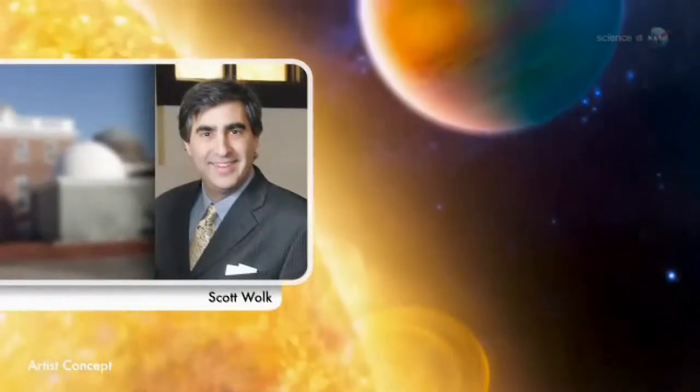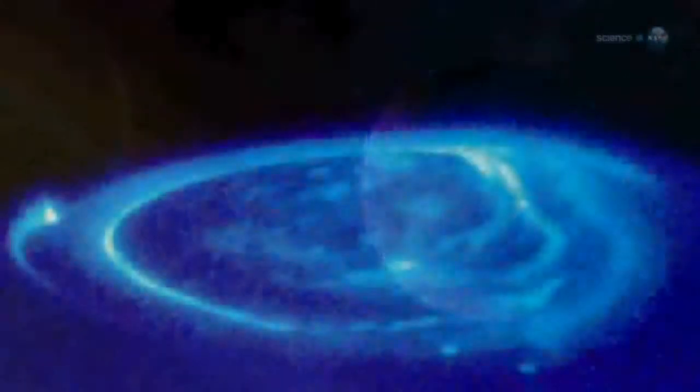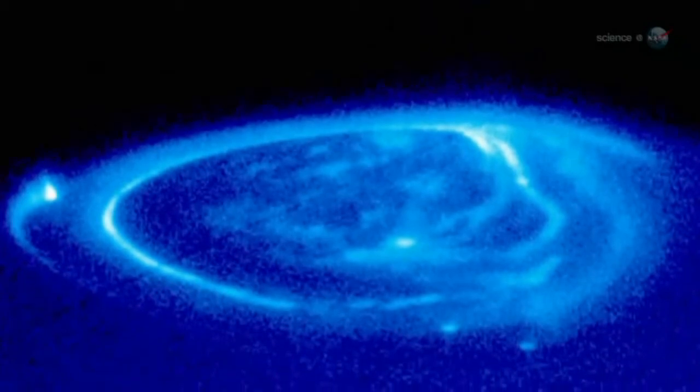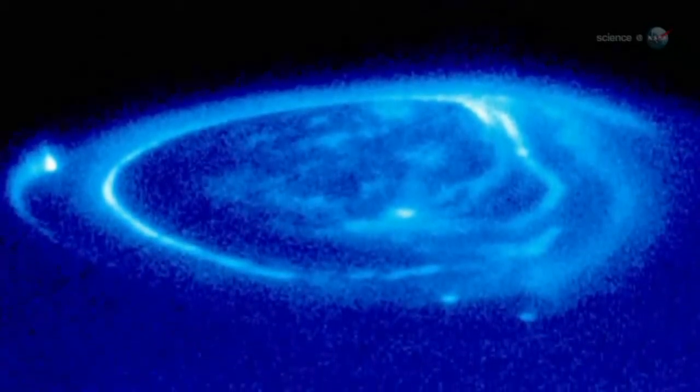Blasts of stellar radiation hitting the planet at point-blank range could have another effect. Auroras that wrap around the planet from pole to pole, orders of magnitude brighter than any northern lights in our own solar system. This is speculative though.